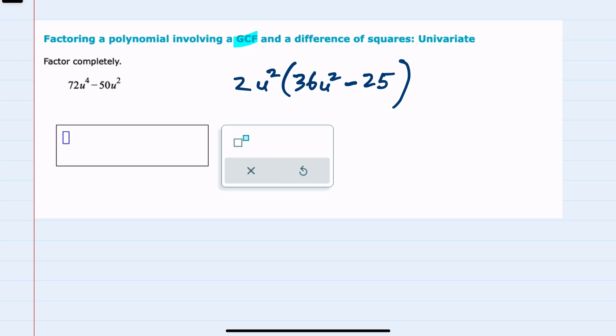And then lastly I should recognize this as the difference of two squares, and when I have the difference of two squares, a squared minus b squared, I can factor to a minus b, a plus b.